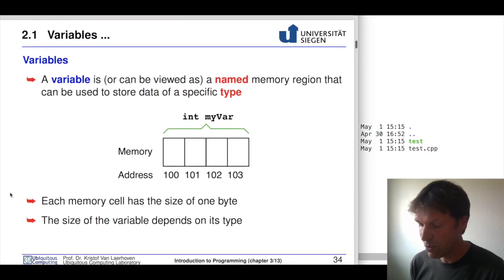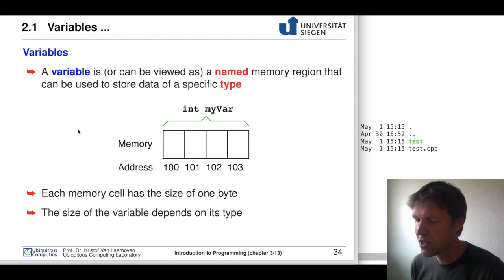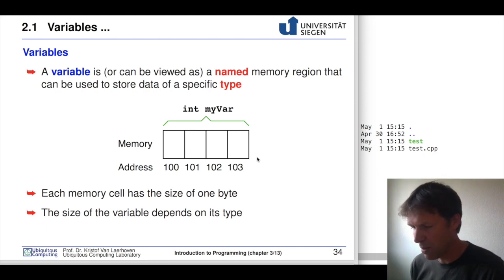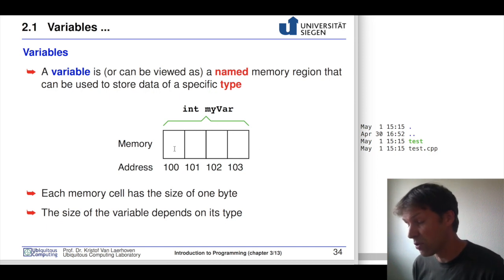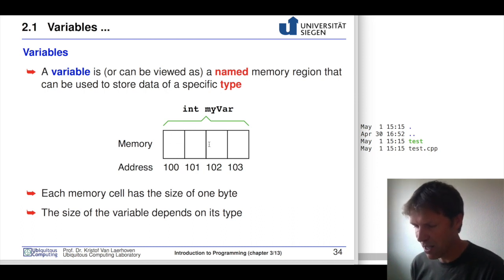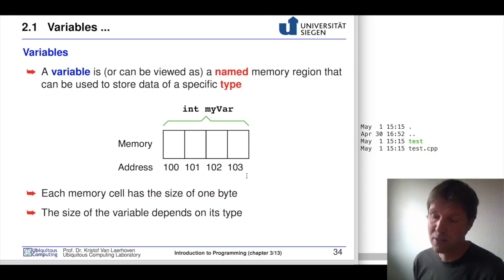For an integer — n, for instance — in C or C++, an integer is of a specific type and holds a particular memory address. This memory address for an integer is four bytes. So we have one byte here, one byte here, one byte here, and one byte here.